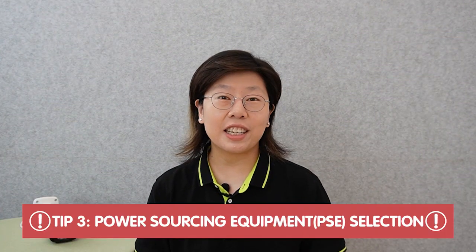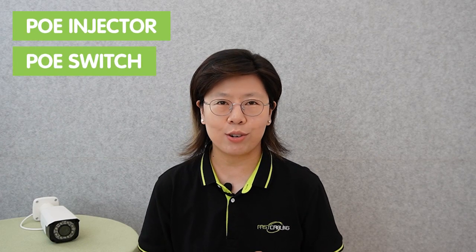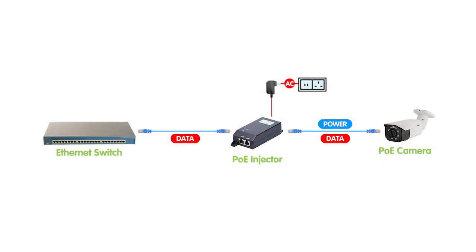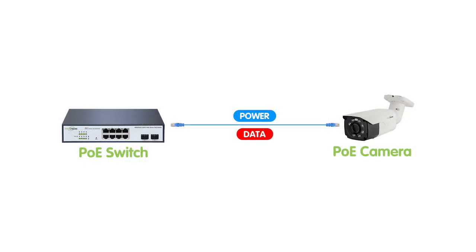Tip number 3: Power Sourcing Equipment (PSE) Selection. The right PSE facilitates reliable power delivery and communication, especially when dealing with extended cable links. Two common PSEs are the PoE injector and PoE switch. PoE injectors are installed between the existing Ethernet switch and the camera to supply power over Ethernet. PoE switches integrate both power and data transmission within the same device, streamlining installation. When choosing a PSE, prioritize those that support longer cable lengths and higher power capability to minimize voltage drop.